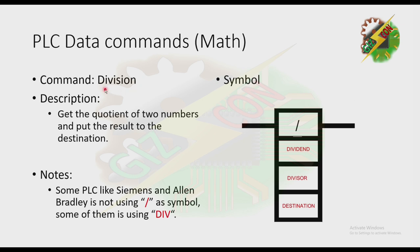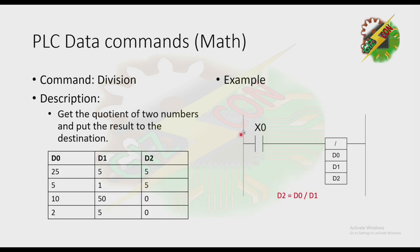Next we have Division — it gets the quotient of two numbers and puts the result to the destination. This is the symbol for this command. If X0 is energized, D0 will be divided by D1 and the result will move to D2. Take note: like subtraction, you cannot interchange D0 and D1, because you will get different values, unlike in addition and multiplication.